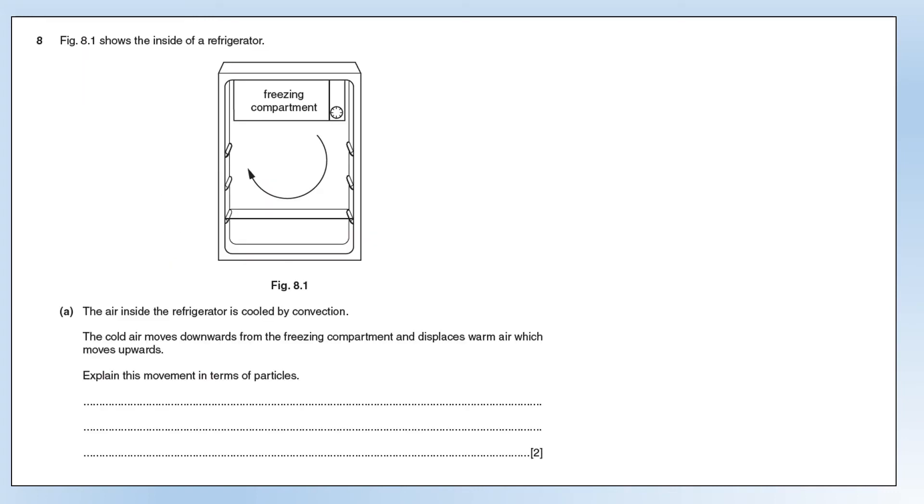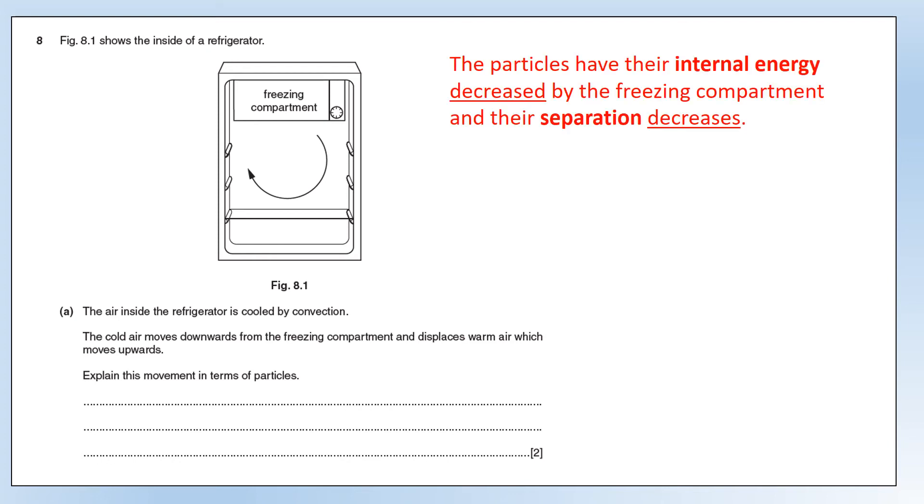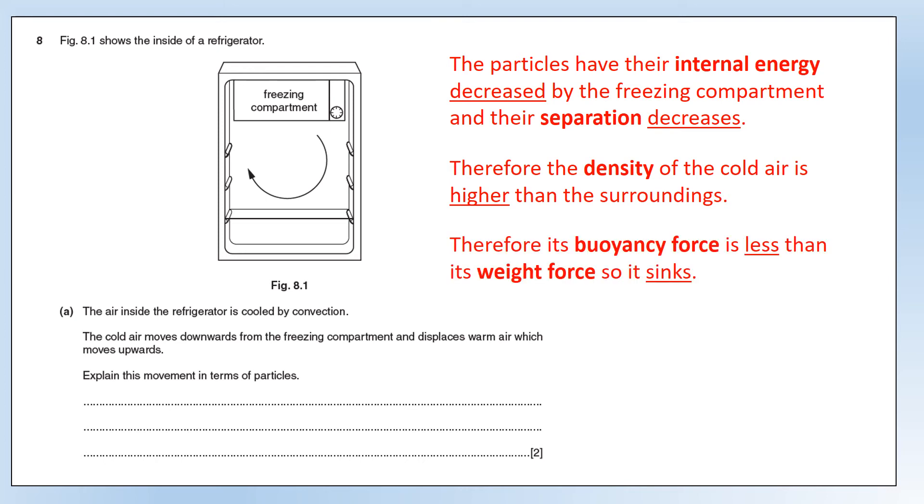The next physics question is question eight, looking at a refrigerator. We've got a freezing compartment at the top, which will be very cold compared to the fridge. And we get a convection current, sort of like the opposite of what we're used to with heaters. The cold air moves downwards from the freezing compartment and displaces warm air, which moves upwards. Any particles that are next to the freezing compartment will have their internal energy decreased as thermal energy is removed from them. Their separation is going to decrease. The density of the cold air is going to be higher than the surroundings. Its buoyancy force is going to be less than its weight force, so it sinks the same way that objects that are more dense than water sink. Essentially, the weight force is bigger than the buoyancy force, so it sinks.